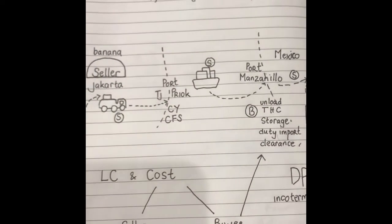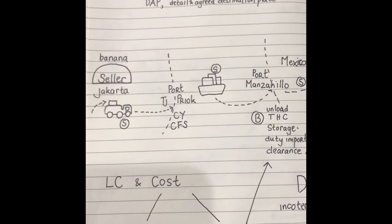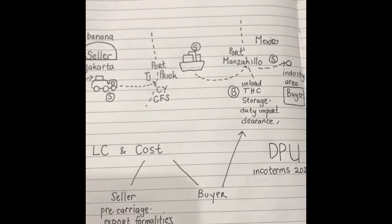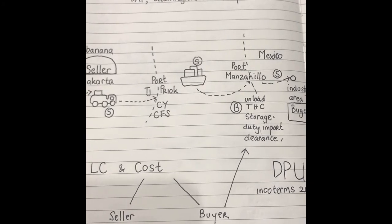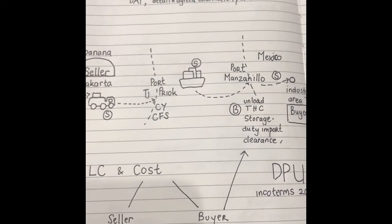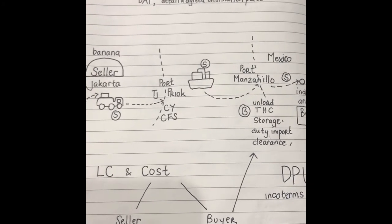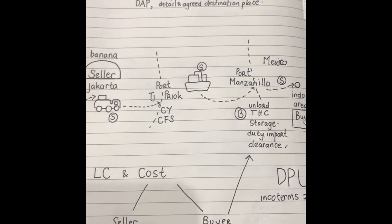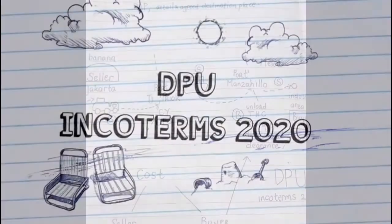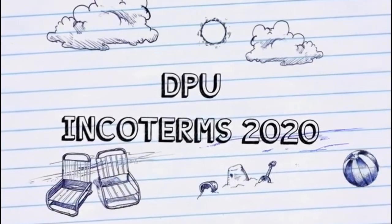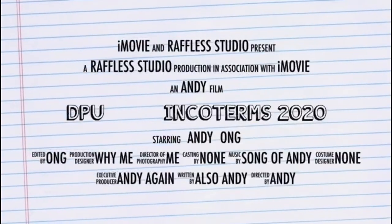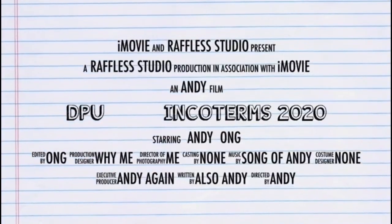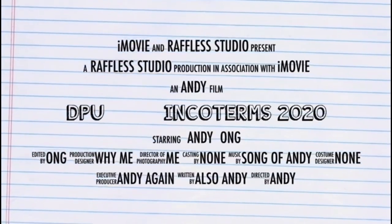So the responsibility to unload the banana or the cargo is the responsibility of the seller. That's very simple. If you ask me why they have DPU, it's normally only a small difference from DAP.